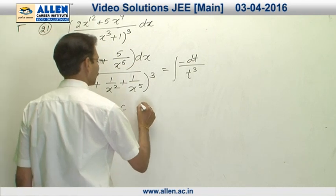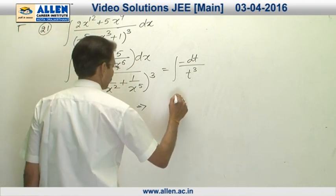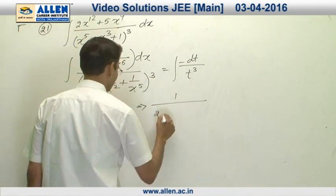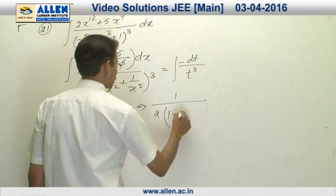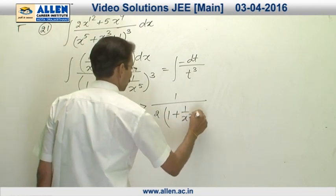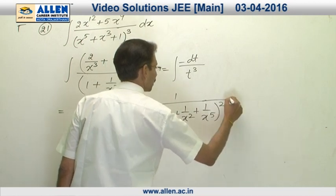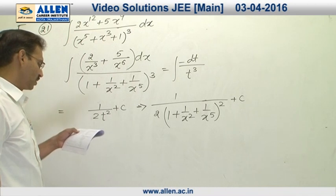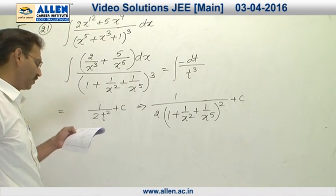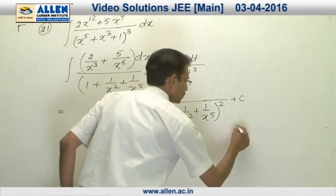So, the answer will become 1 upon 2, 1 plus 1 upon x square plus 1 upon x power 5 whole square plus c. So, the correct option will be 3. The right answer is 3.